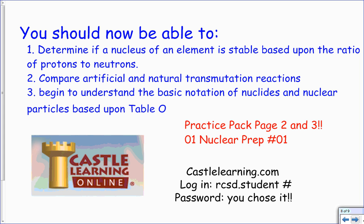And that's it, we've kind of introduced ourselves to nuclear chemistry and what it's all about. We can determine based on just how many protons are in a nucleus if it is stable or not. We can compare artificial and natural transmutation now and begin to understand the basics of our mutation. There is prep for number one for nuclear. You can do practice pages 2 and 3. We are right on to this unit and finishing up the year. I'll see you guys tomorrow in class.